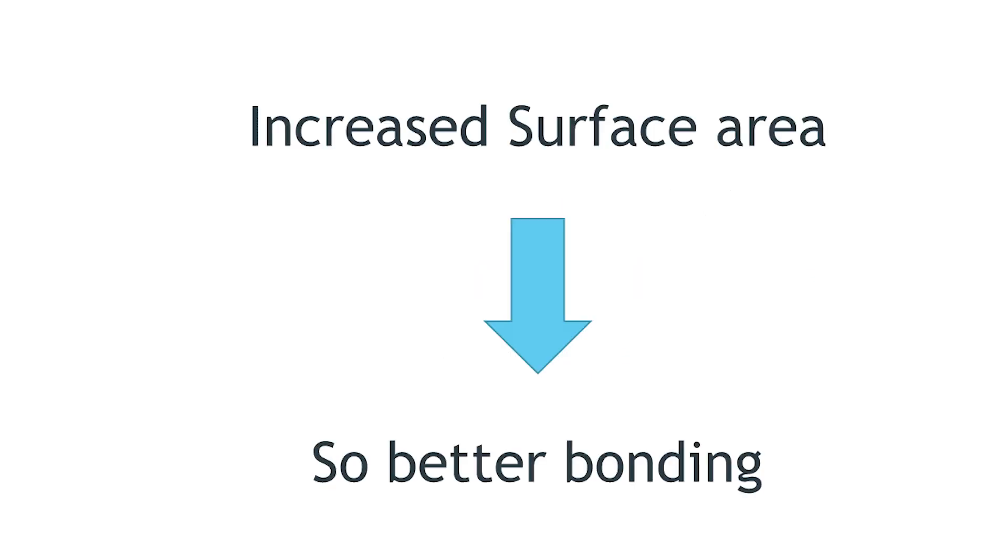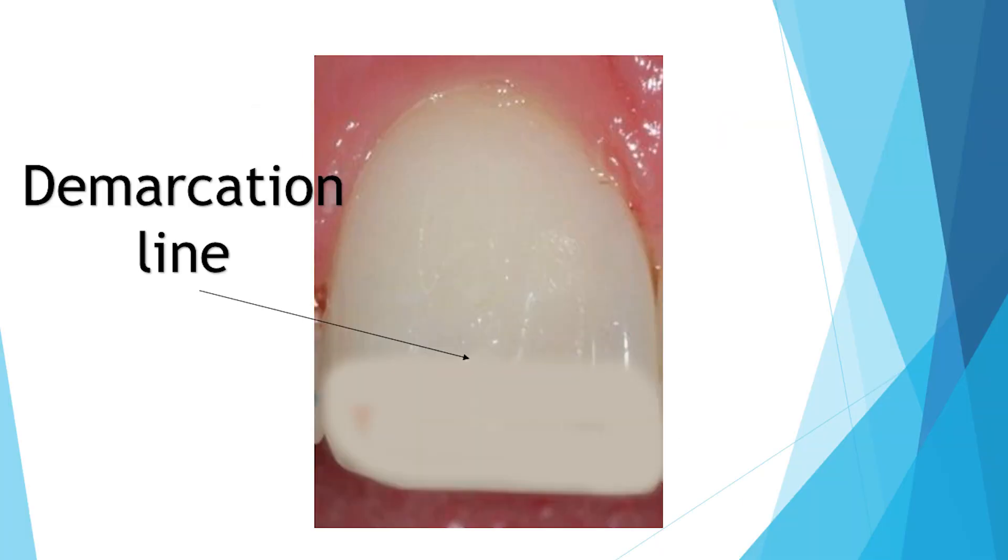What is the advantage of giving a bevel for composite? One thing is you can incorporate minor defects very easily. Second, by increasing surface area you are exposing more enamel rods, so bonding improves.